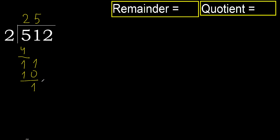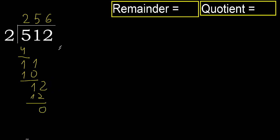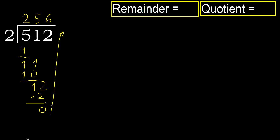Next: 12. 2 multiplied by 6? 12 is not greater. Ok, subtract. 12 minus 12? 0. Next, there is no number, therefore finished.